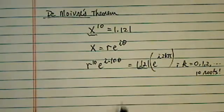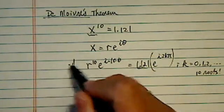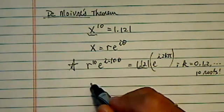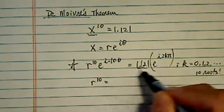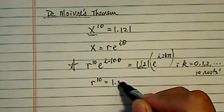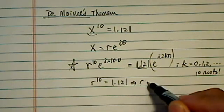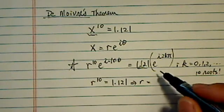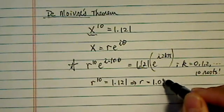So the majority of the work is really done from this one step. Next thing we're going to do is r to the 10th, we're going to equate equal to 1.21. And taking the roots on the calculator, you'll see this one is equal to 1.011.